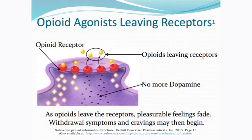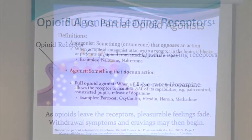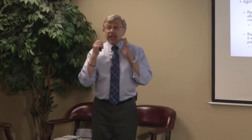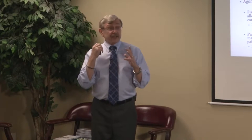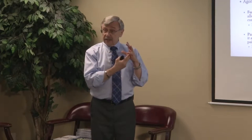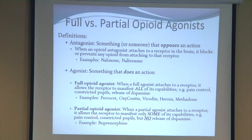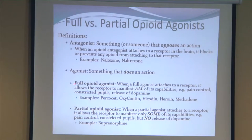That's when withdrawal symptoms and cravings can start with a full agonist. A partial agonist also attaches to the same receptor — it's like a key that only fits partially into the lock. A partial agonist allows the receptor to manifest only some of its capabilities: pain control, constricted pupils, but no release of dopamine. Example: buprenorphine is a partial agonist. Methadone is a full agonist, so you can get high on methadone but not on buprenorphine.